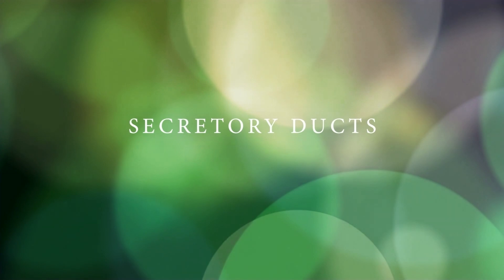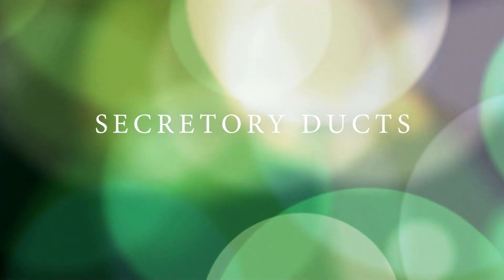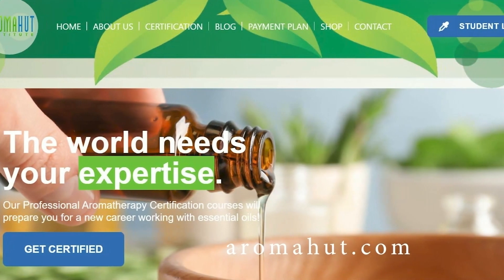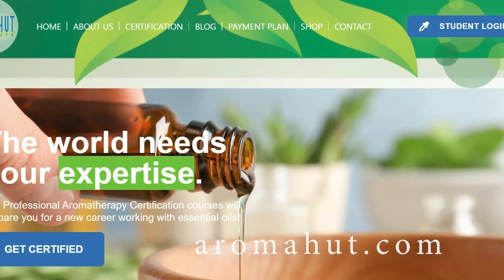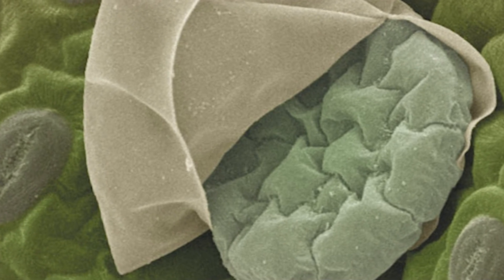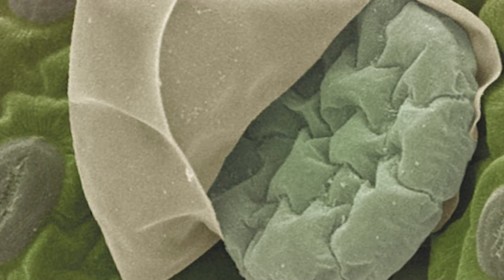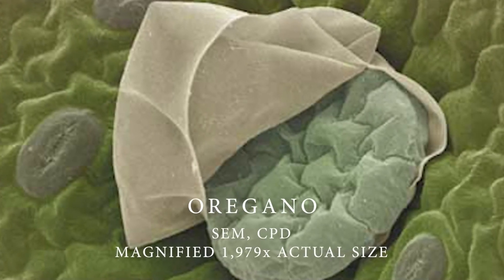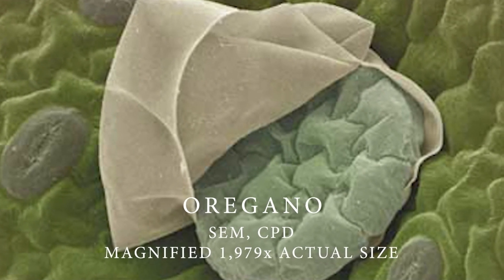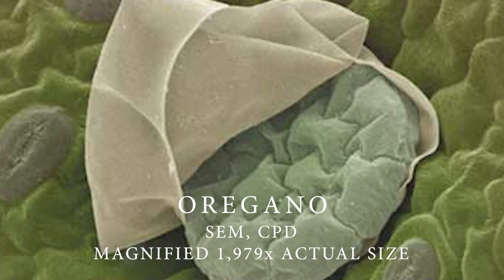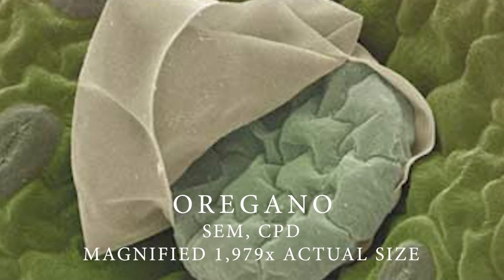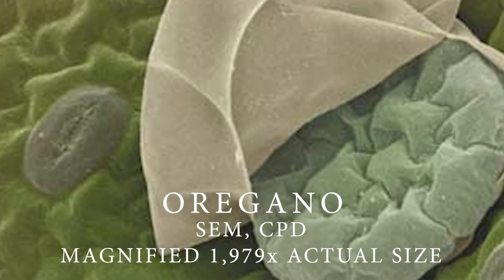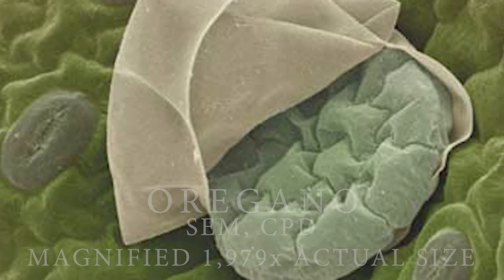Another group is secretory ducts — elongated cavities that often form a network extending from the roots throughout the stems to the leaves, flowers, and fruits. This next picture looks almost like a pillow with a little blanket over it — it's oregano. On the surface of the oregano leaf there's a little pocket; just like if you were to take an oregano leaf and pinch it, that little bit of oil is going to be released. This has been magnified 1,979 times its actual size.